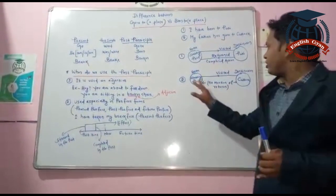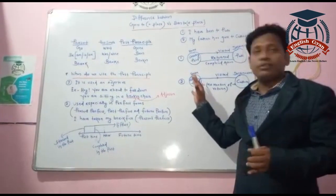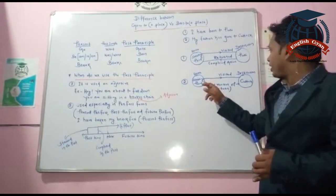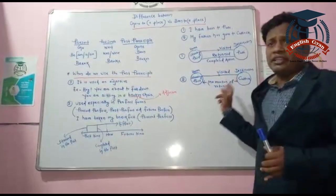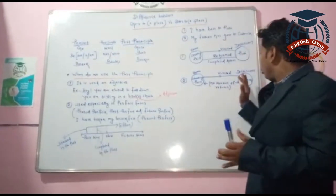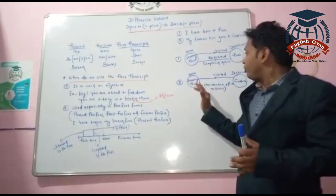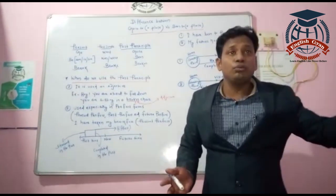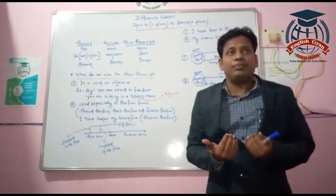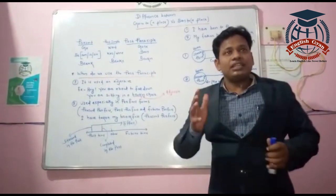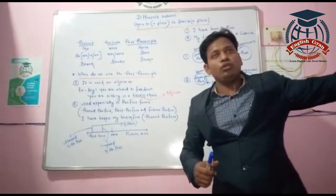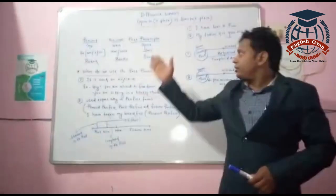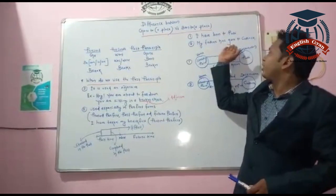Now consider 'My father has gone to Puri.' Your starting point is home and the destination is Puri. The visit part is there, but there is no mention of return. So if someone asks 'Where is your father?', you say 'My father has gone to Puri' — meaning he visited Puri but has not yet returned. That is the big difference between 'been' and 'gone.'